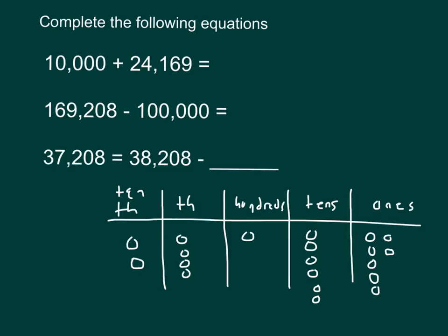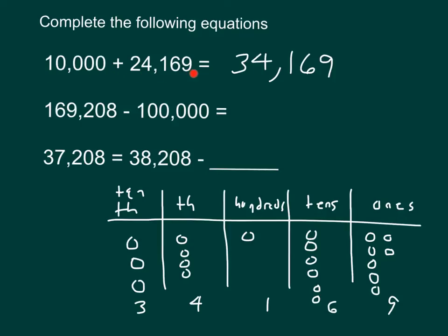I'm now looking for 10,000 more than this number, so I'll place one more disk in the ten thousands place. Underneath this, I'll write the digits by counting the disks in each place, giving me 3, 4, 1, 6, 9. Placing our comma appropriately, I can read this number sentence as 10,000 plus 24,169 equals 34,169. That is 10,000 more than 24,169.